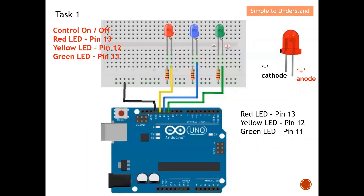Before I touch on the software portion, let's quickly go through the hardware. The task requires us to control the red LED through pin 13, the yellow LED through pin 12, and the green LED through pin 11 on the Arduino Uno board.